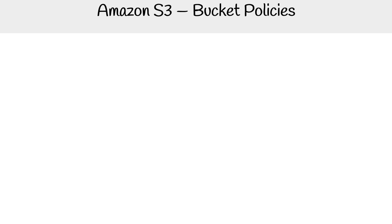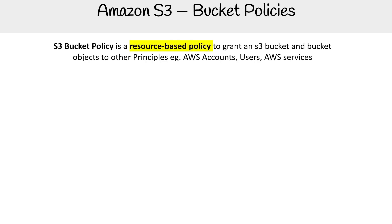Let's take a look at S3 bucket policies, which is one of the most important security features — other than block public access — that you need to know, as you're going to be using it quite a bit whenever you want to give people access to your bucket. An S3 bucket policy is a resource-based policy to grant an S3 bucket and bucket objects to other principals, such as another AWS account or users and services. ACLs are the old way of doing it, so a bucket policy is a more robust and recommended approach.